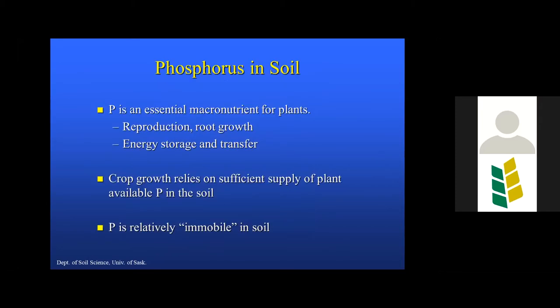We'll start with phosphorus in soil. Phosphorus is an essential macronutrient for plants — it's involved in reproduction, very important in root growth, and it's really the energy currency of life. Crops critically rely on a sufficient supply of plant-available phosphorus, especially the annual crops we grow on the prairies. They need an early supply to carry out cell division associated with seedling growth. In fact, about 50% of phosphorus uptake takes place by the time less than 25% of dry matter has been produced.